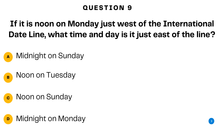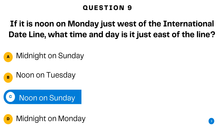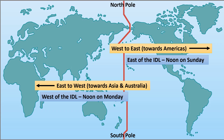Question number nine. If it is noon on Monday just west of the international dateline, what time and day is it just east of the line? A. Midnight on Sunday. B. Noon on Tuesday. C. Noon on Sunday. Or D. Midnight on Monday. The answer is C — noon on Sunday. If it is noon on Monday just west of the international dateline, then it would be noon on Sunday just east of the line. Remember, when you move east across the international dateline, you move backward by one day, so crossing eastward from Monday means you move into Sunday.